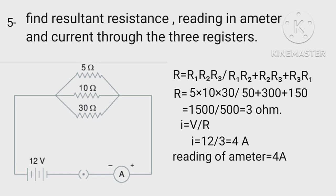PD for resistance 5, 10, 30 ohms is same. Therefore, I1 equals V upon R1 equals 12 upon 5 equals 2.4 ampere. Similarly, I2 equals 12 upon 10 equals 1.2 ampere. I3 equals 12 upon 30 equals 0.4 ampere.